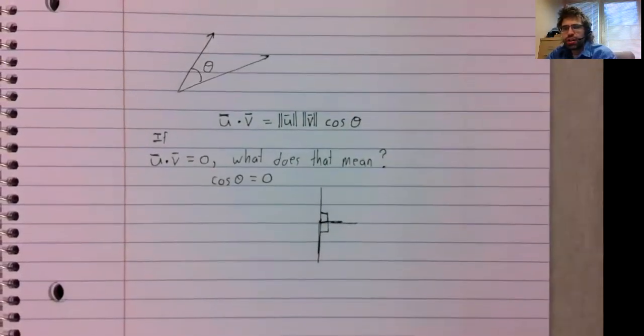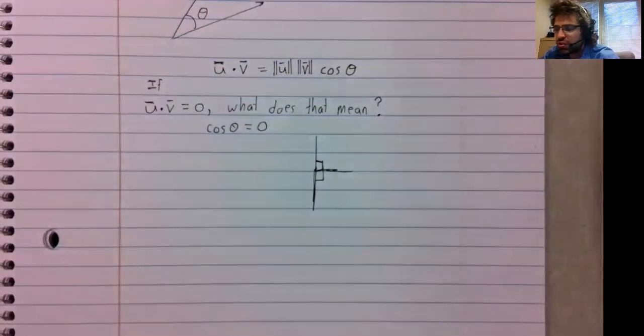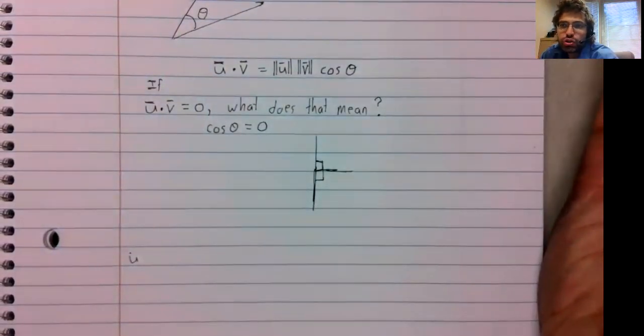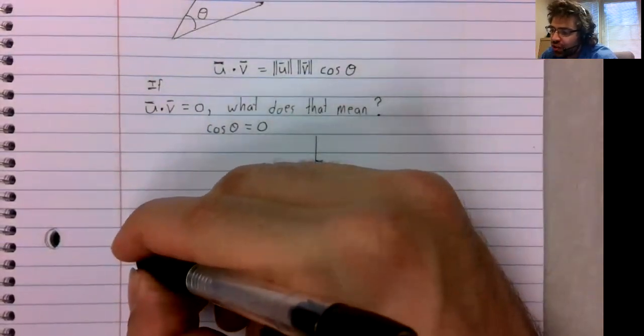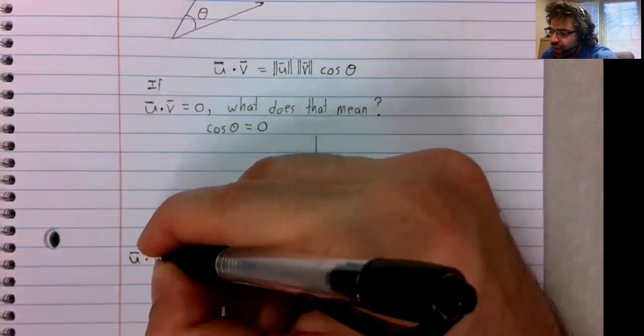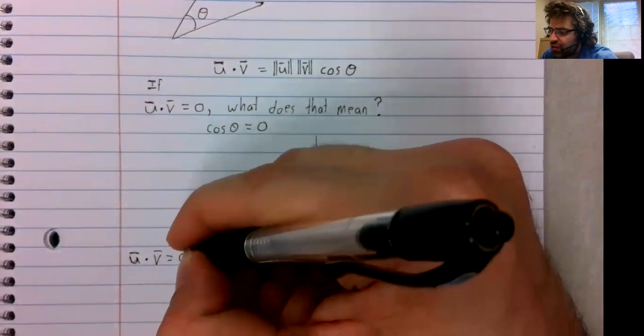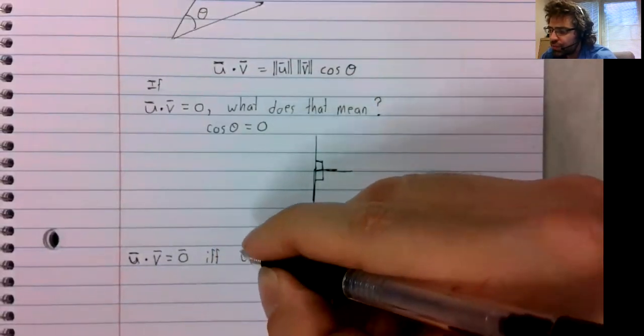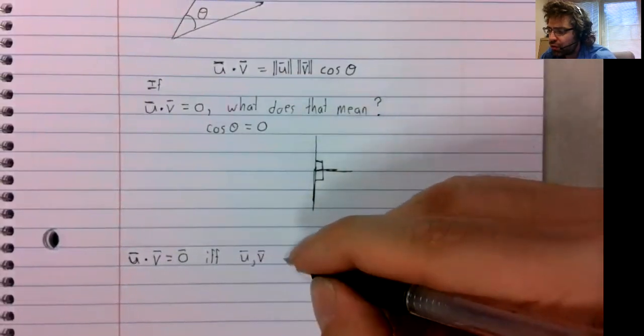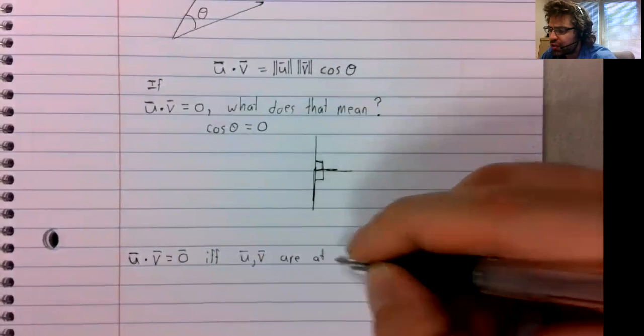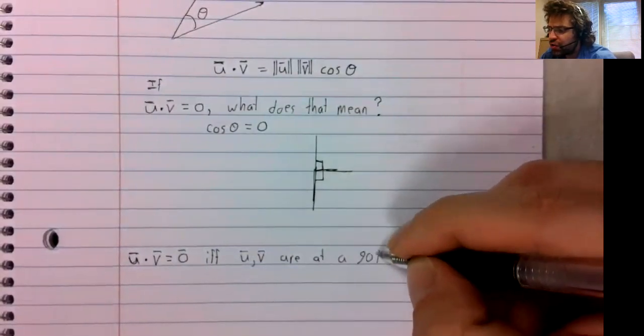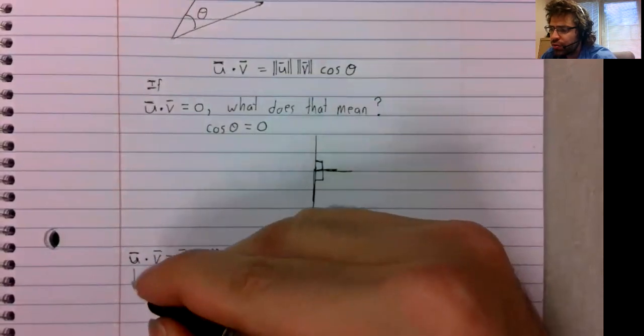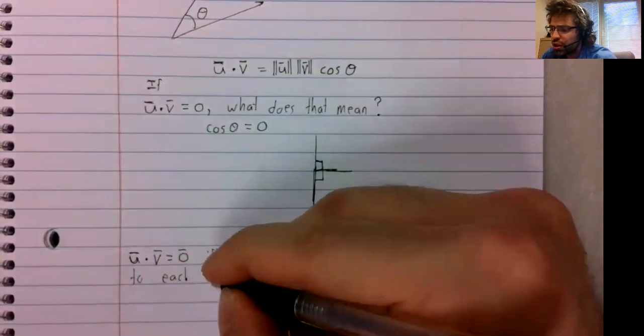So if the dot product is zero, we can informally understand that to mean, I say informally, but it's pretty much true. I mean, it's the correct interpretation. That a dot product is zero if and only if the vectors are at a 90 degree angle to each other.